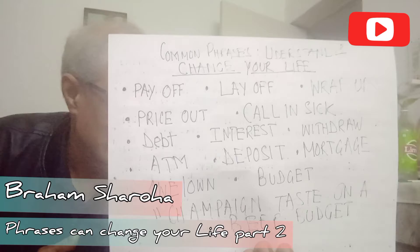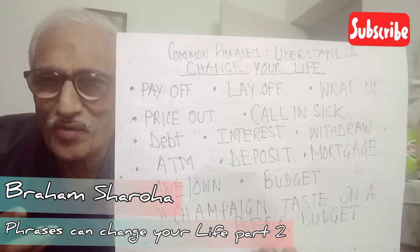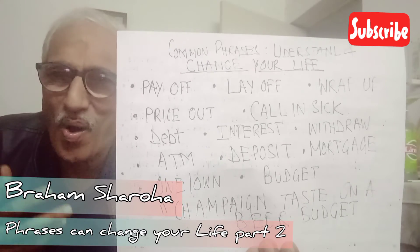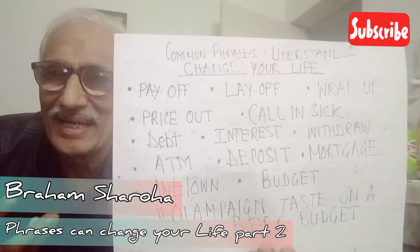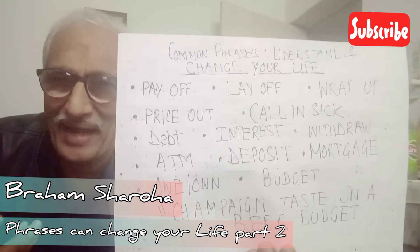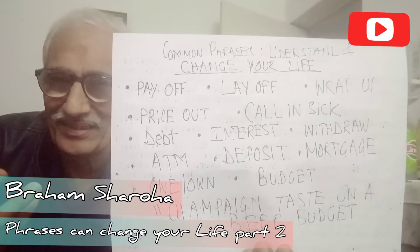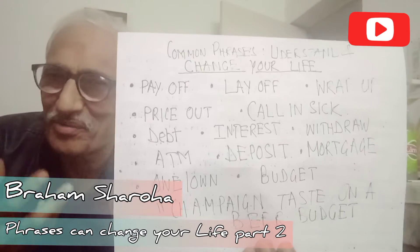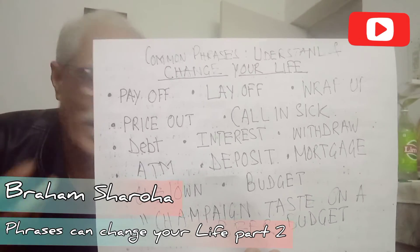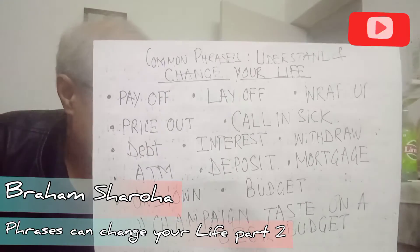The next word is 'ATM.' Do you know the full form? ATM stands for Automated Teller Machine. A teller is a person who gives money to you or receives money in a bank. This machine is an automated teller — it receives money and also gives out money. You can withdraw money from an ATM or deposit money into an ATM.